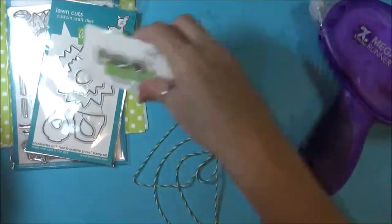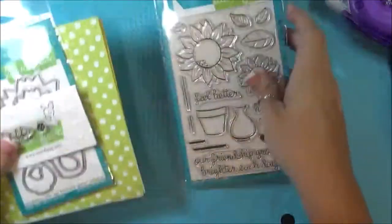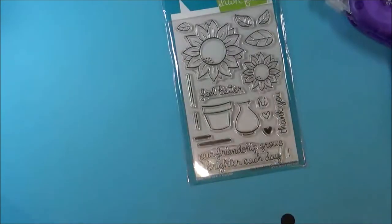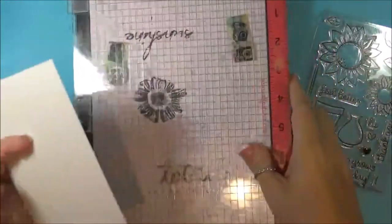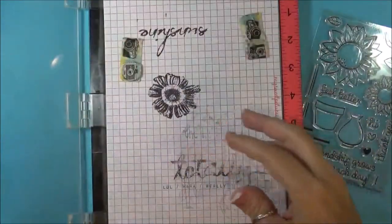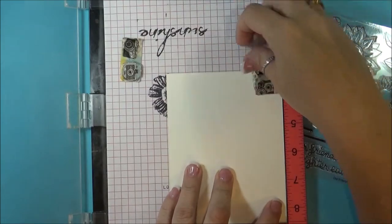So I'm going to be creating a card with these and also using some Zyron adhesives. To start, get these stamps out and my MISTI, and this is some watercolor paper that I'm going to be using.